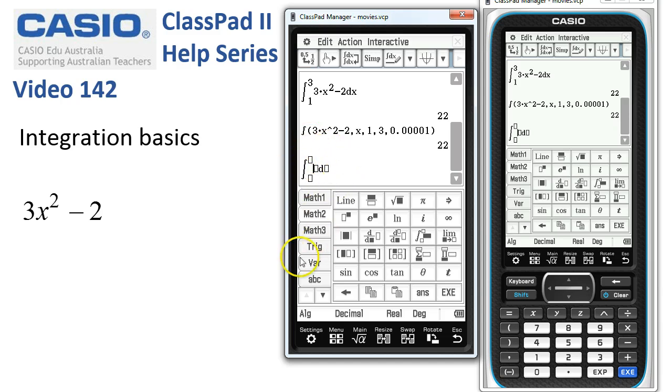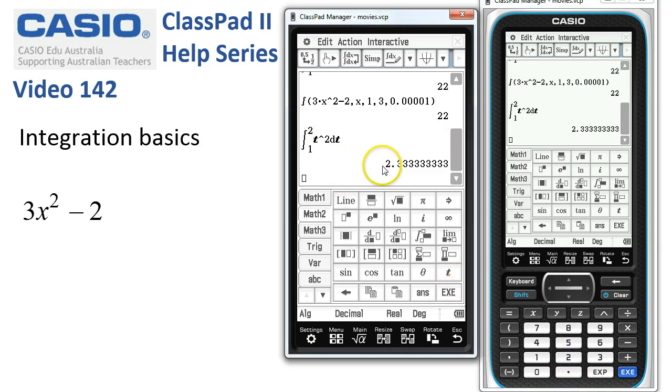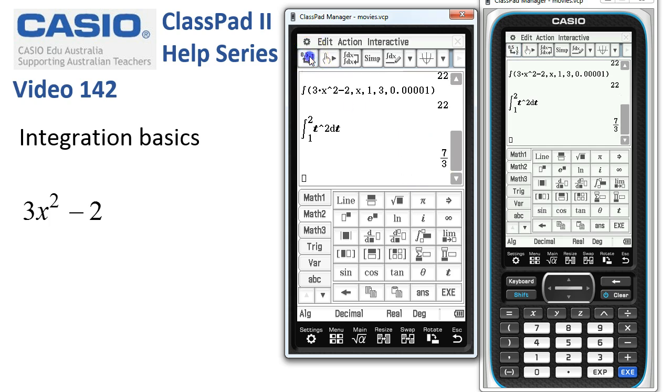We're not restricted obviously to using x as the variable. We might have a function like t squared with respect to t and maybe from 1 to 2 or something like that. We tap execute and we get an answer here. Obviously if we wanted it exactly, it's just seven thirds.